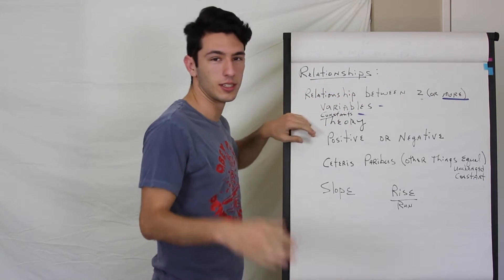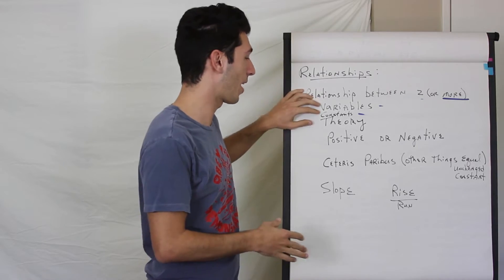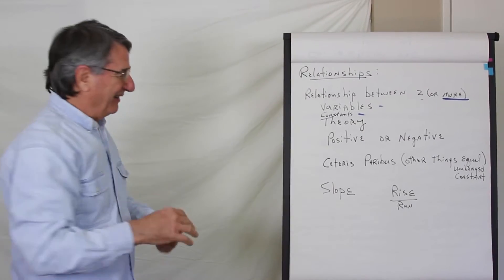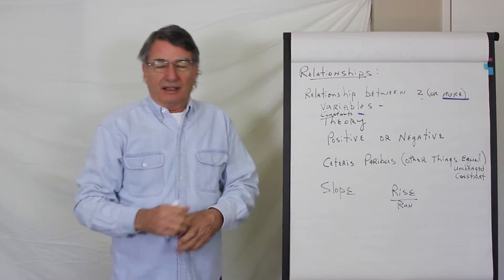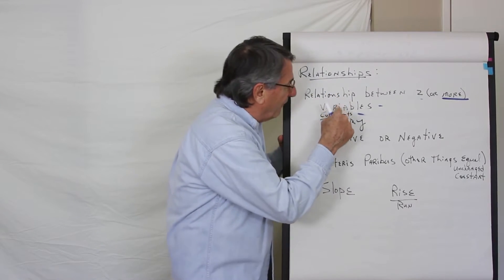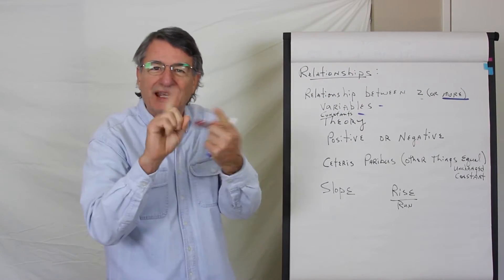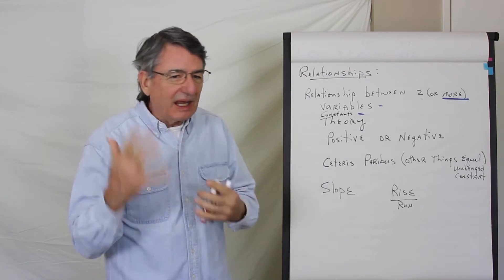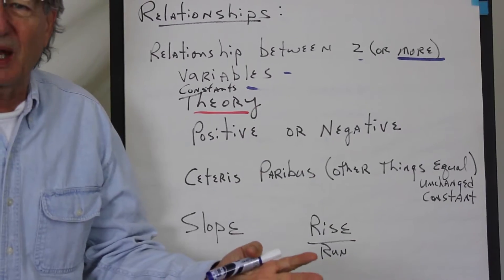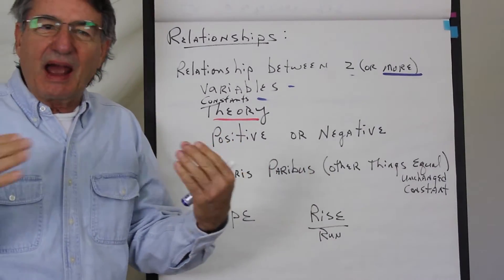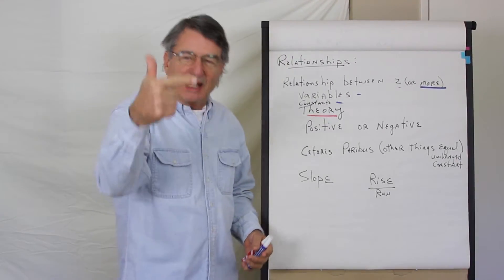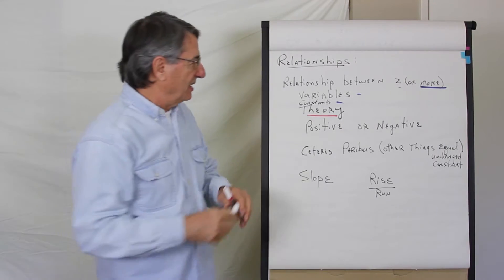Relationships between two or more people — that's not what we're talking about. We're talking about relationships between variables. These are scientific things, things that are connected with each other by theory. For instance, the displacement of an engine in a vehicle and how fast it goes from 0 to 60. There's a relationship between the engine displacement and how fast it goes from 0 to 60.